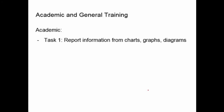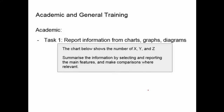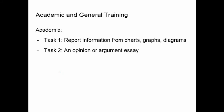Let's talk about differences between the academic and general training writing tests. For the academic test, task one asks you to report information from charts, graphs, or diagrams. You'll have a chart and be told to summarize the information by selecting and reporting main features and making comparisons where relevant. This task does not require opinions — you just write a report from the information provided. Task two on the academic IELTS is an opinion or argument essay — your chance to demonstrate your opinion on a topic they provide.